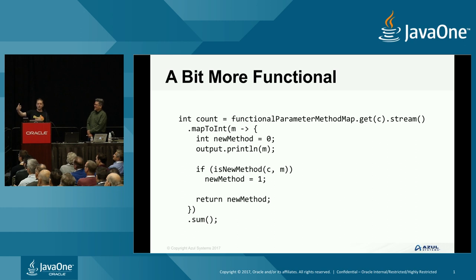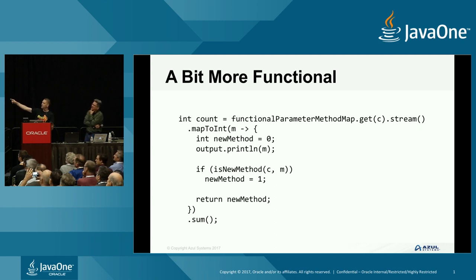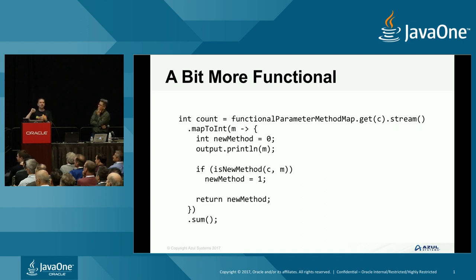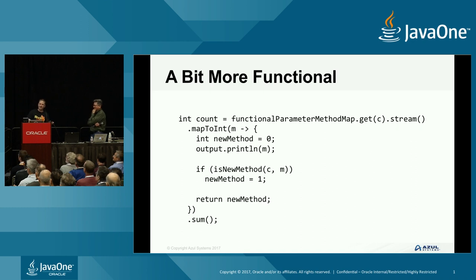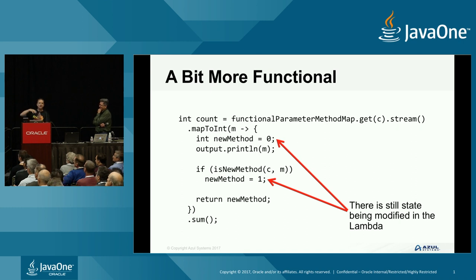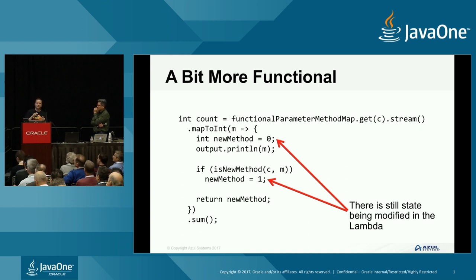So I went away and had another go. I thought: I don't need external state. I'll make it slightly more complicated - create the stream, and I'll have a variable inside my lambda expression: newMethod is zero. I'll print out the method, check if it's new, set newMethod to one, then return newMethod. I get a stream of ones and zeros, add those up, and get a count of new methods. Again I showed Stuart and he said: this is kind of more functional, but it's not functional - we've still got state involved. Even though we've taken the state internally, we're still modifying state.